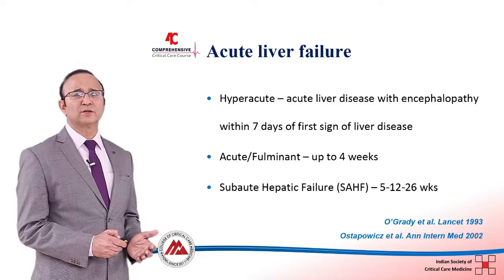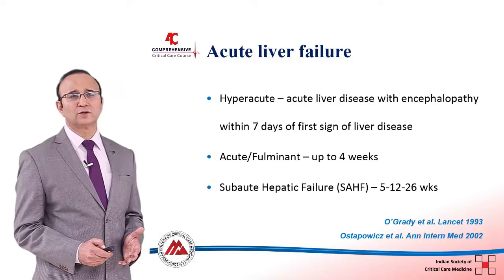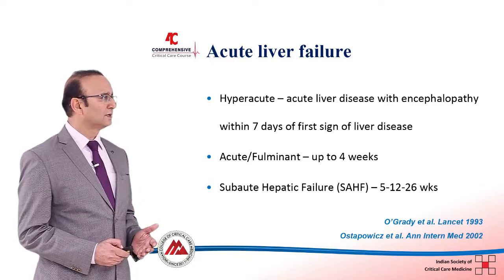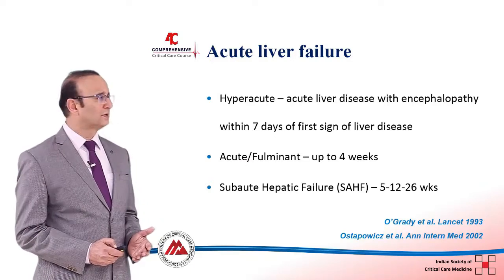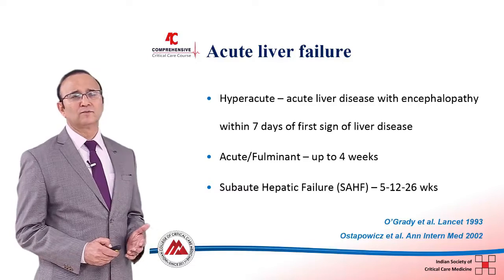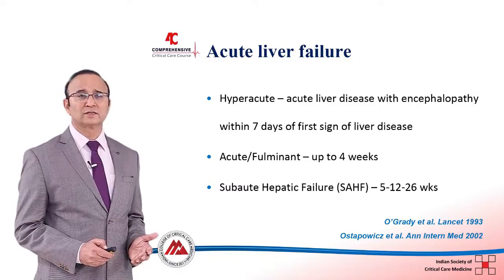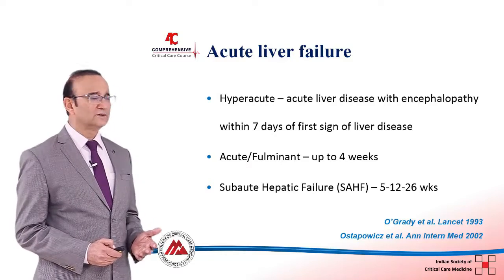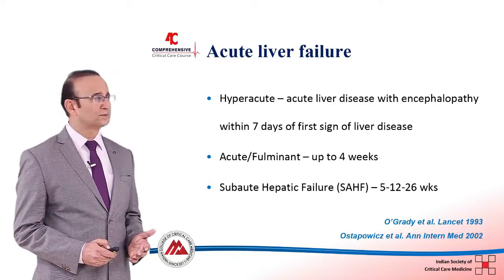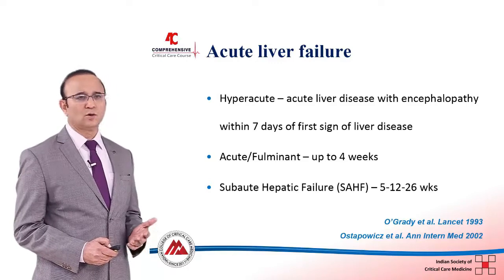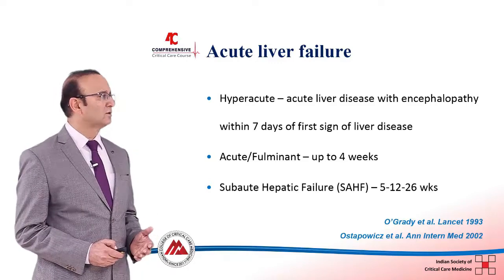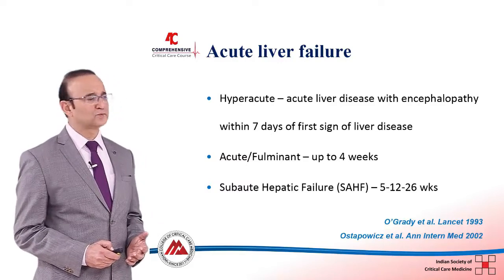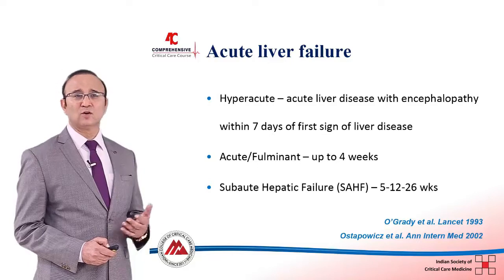Acute liver failure has been further divided based on the time difference between the onset of encephalopathy and the onset of jaundice or liver disease. If encephalopathy develops within seven days of the first sign of liver disease or jaundice, you call it hyper-acute. You call it acute or fulminant if encephalopathy develops within four weeks of the onset of jaundice. You call it sub-acute hepatic failure if encephalopathy develops within 26 weeks of the onset of jaundice.